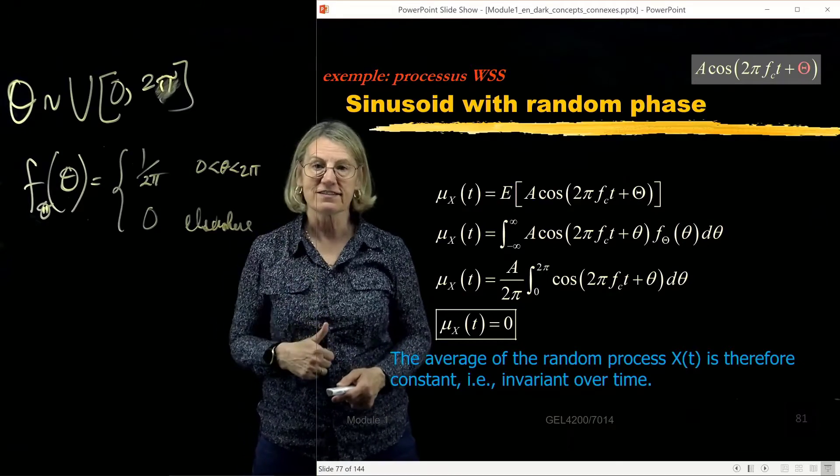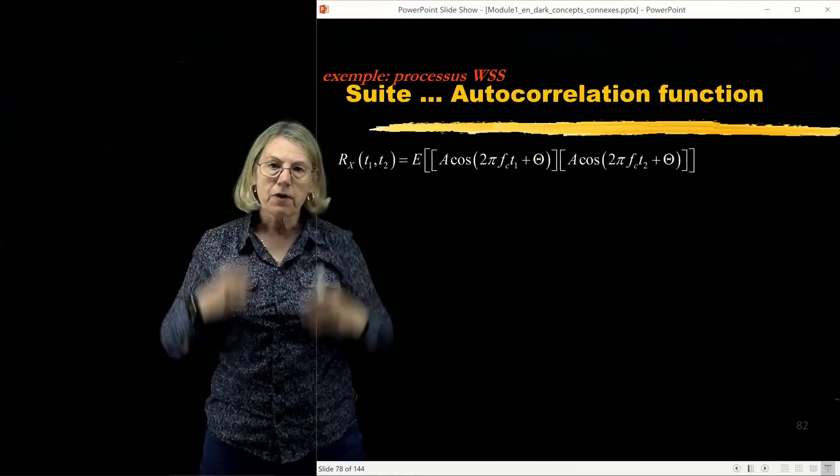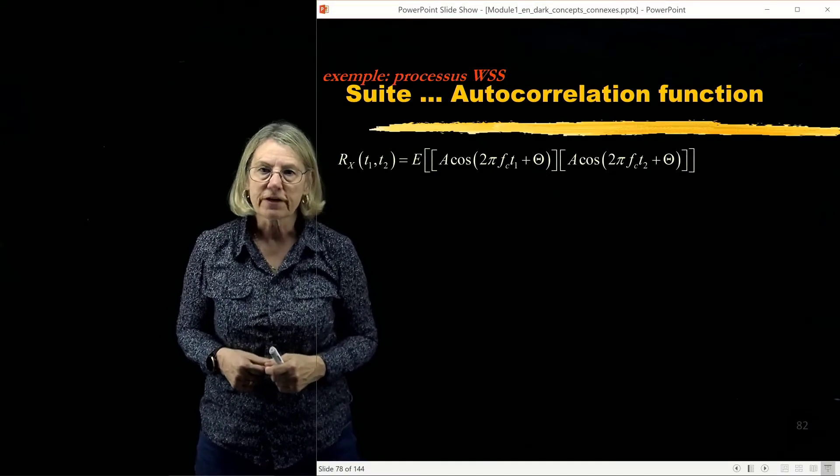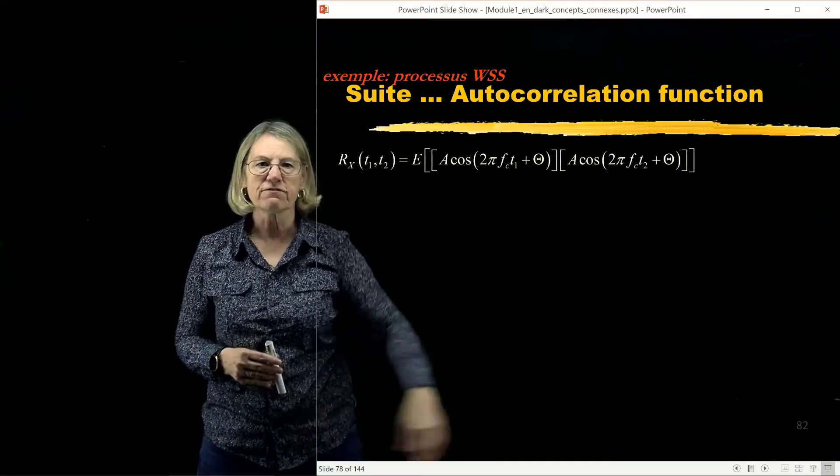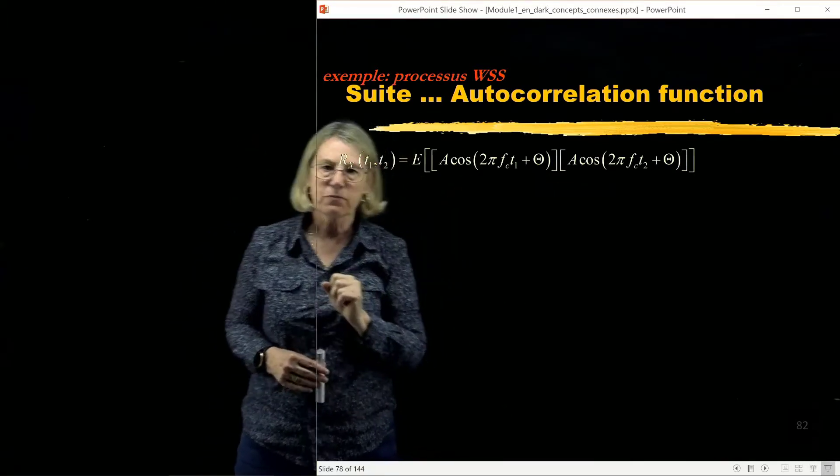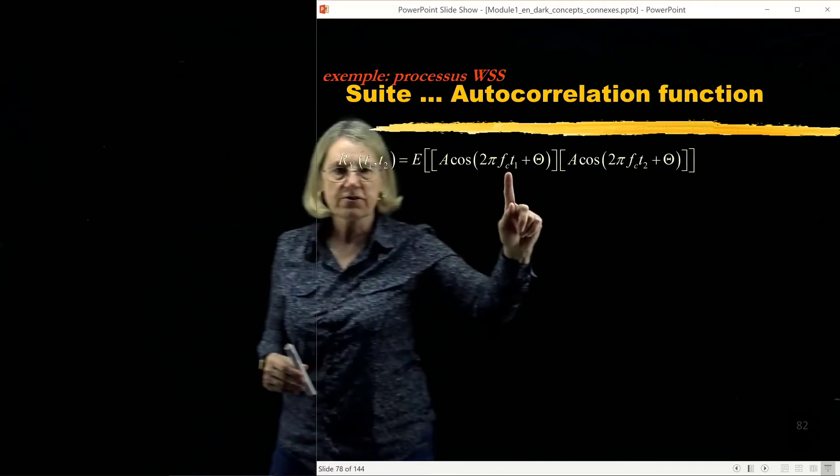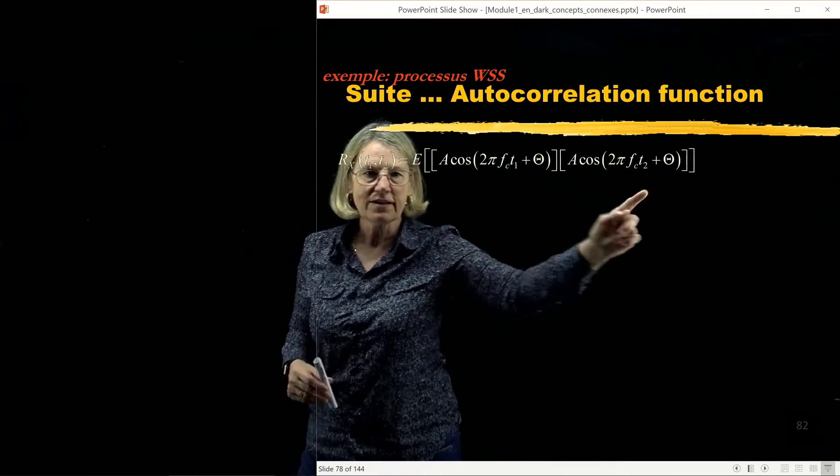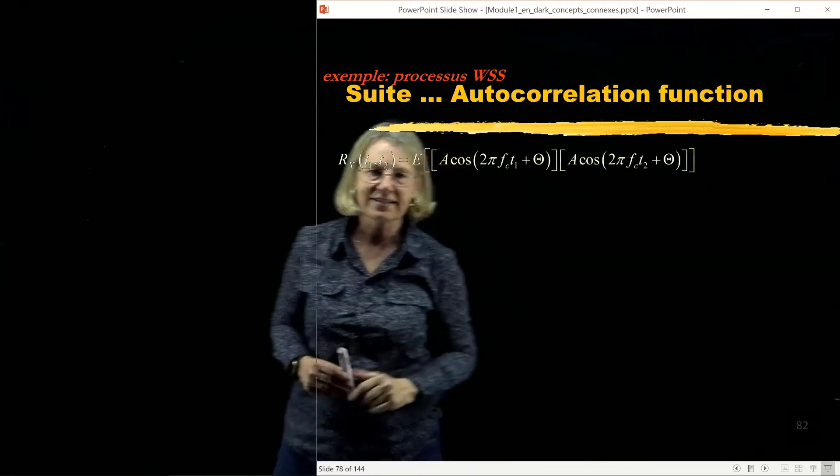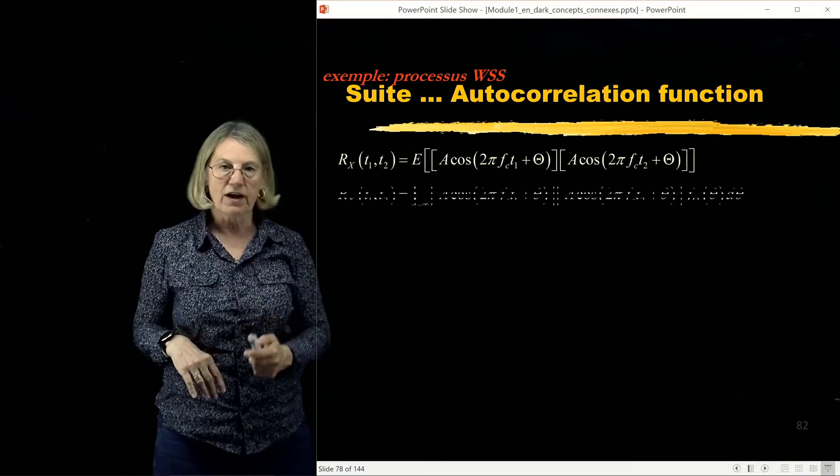But now to make sure it's wide sense stationary I have to move on to the second property. So for the second property I have to look at the autocorrelation function and the definition of the autocorrelation function is I take the expected value and I take the product of this random process at two different instances of time. So in the first case I evaluate it at time t1, second time I evaluate it at time t2.